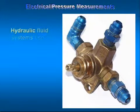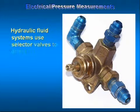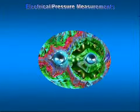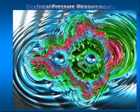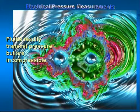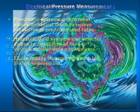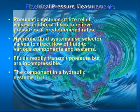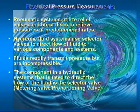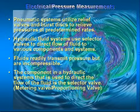Hydraulic fluid systems use selector valves to direct flow of fluid to various components and systems. Fluids readily transmit pressure but are incompressible. The component in a hydraulic system that is used to direct the flow of the fluid is the selector valve, sometimes called a metering valve or proportioning valve.